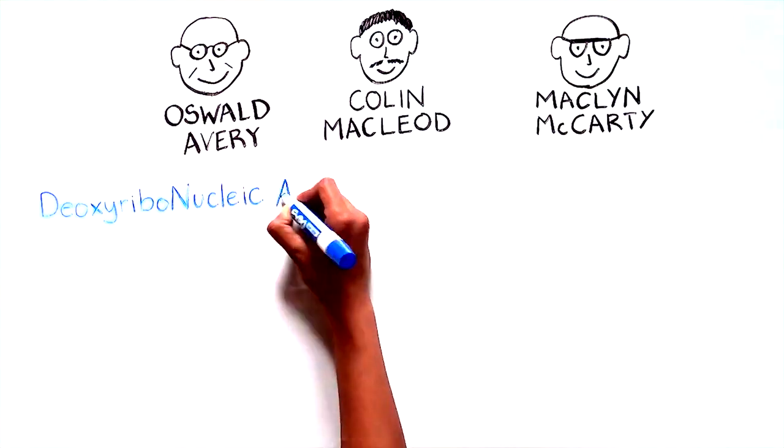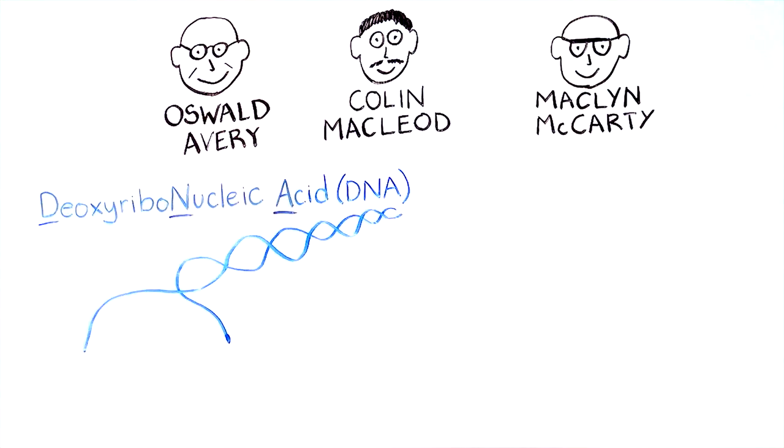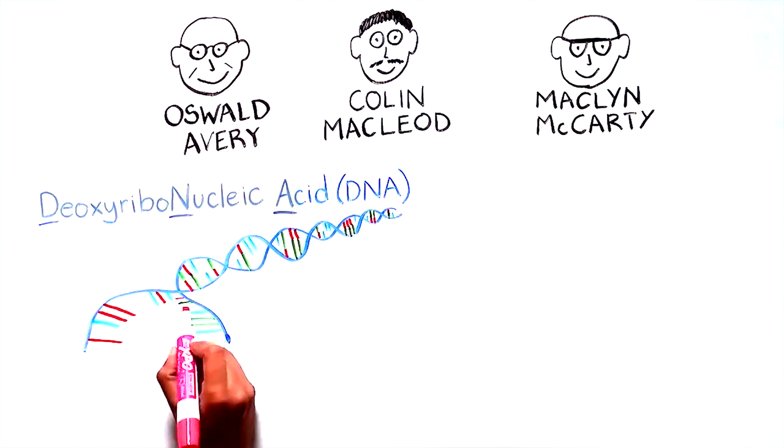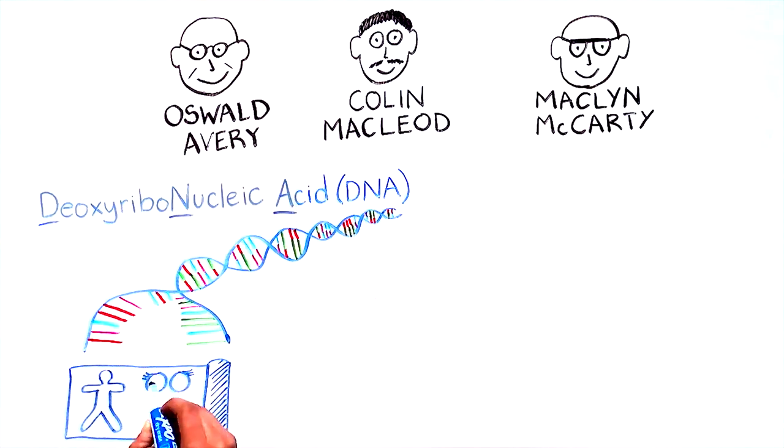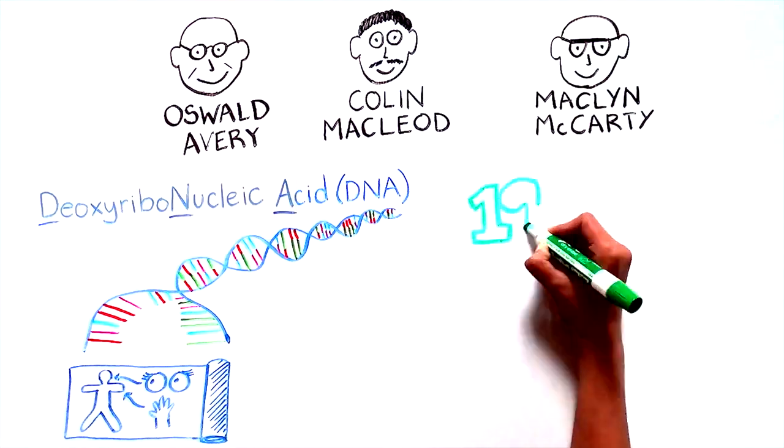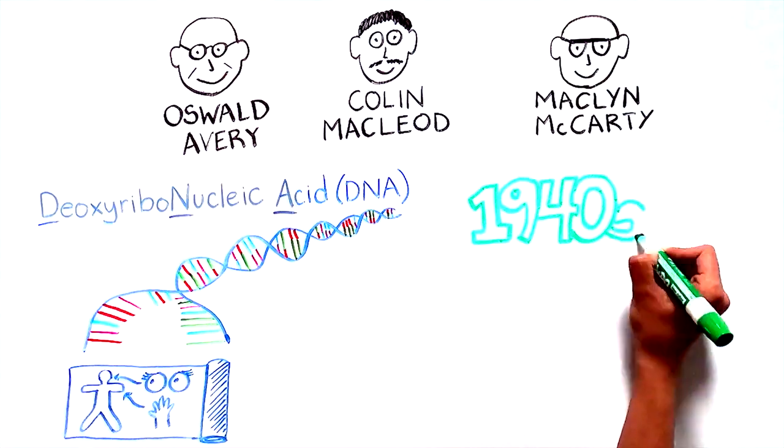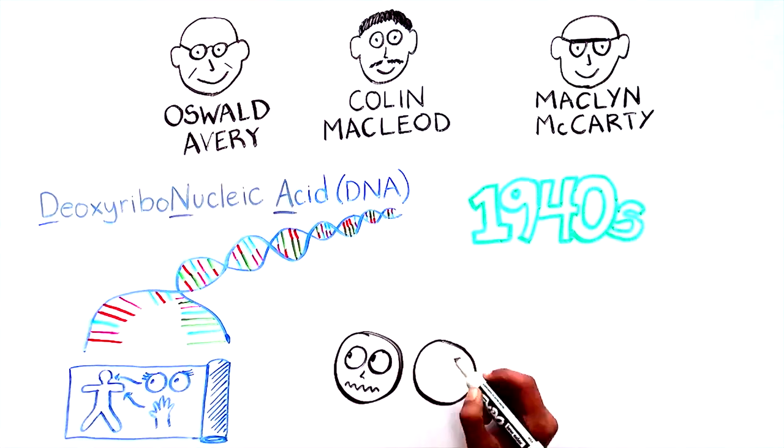Their pioneering research provided proof that deoxyribonucleic acid, or DNA, contains the blueprint of who we are and what we look like. That DNA is in fact the heritable information. This finding may seem obvious now, but back in the 1940s, it was incredibly controversial.